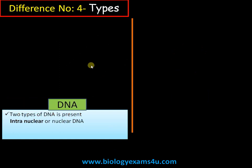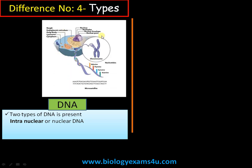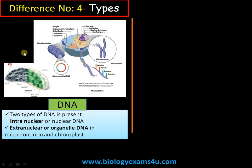Difference number four is regarding the types. There are two types of DNA: first is intranuclear or nuclear DNA, which stores genetic information and is transferred to the next generation; and second is extranuclear or organelle DNA, which is present in semi-autonomous organelles like mitochondria in eukaryotic cells and chloroplasts in plant cells.